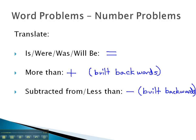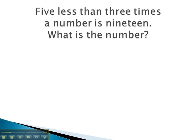Let's take a look at some problems where we have to solve using this translating method. In this problem, we see several key phrases. We see 5 less than 3 times a number. 5 less than means we subtract 5 because it is built backwards.